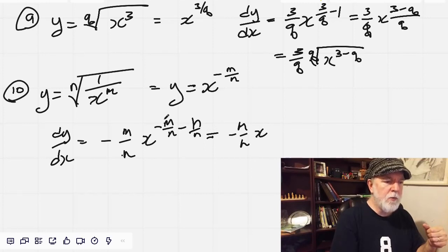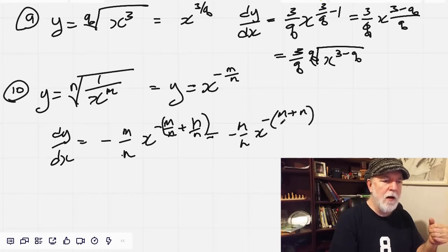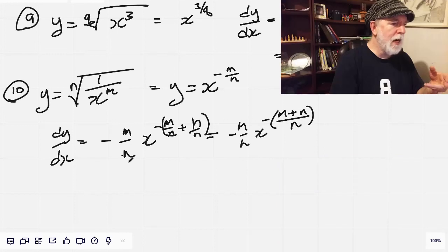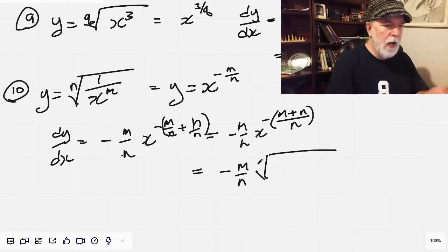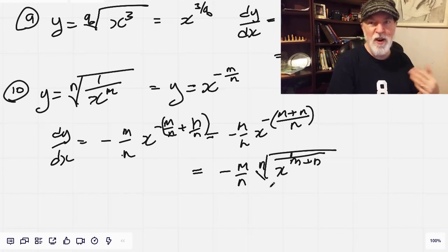Let's rewrite that. And so now we've got negative m plus n all over n. Writing that again as a radical that all equals negative m over n, the nth root of x to the m plus n. But that should all be in the denominator, 1 over x to the m plus n. And there you have it. 10 various incarnations of the power rule for x to the power of something.